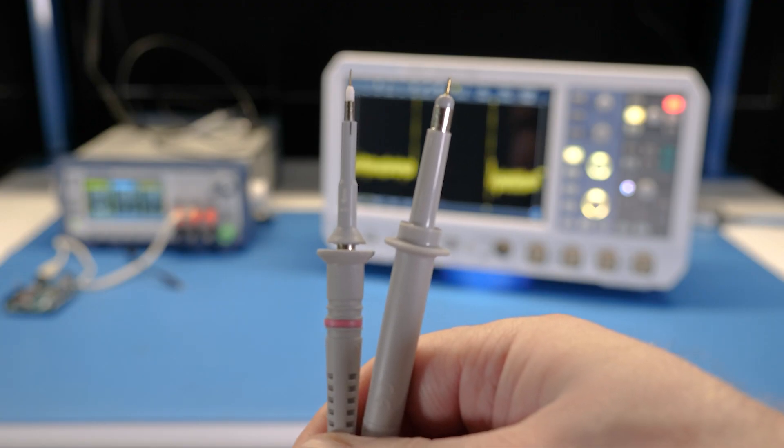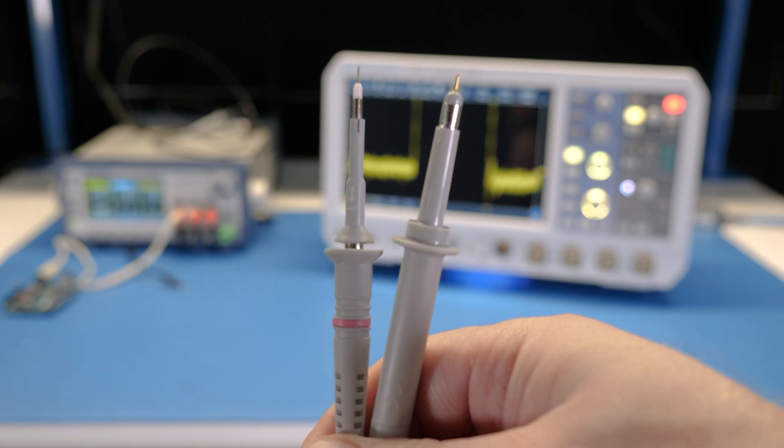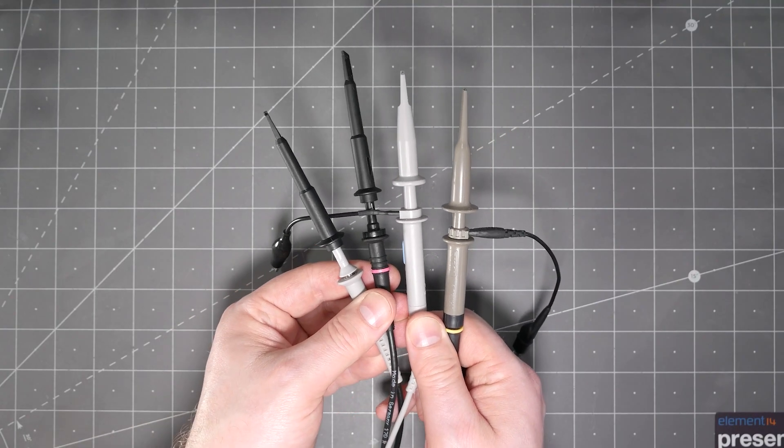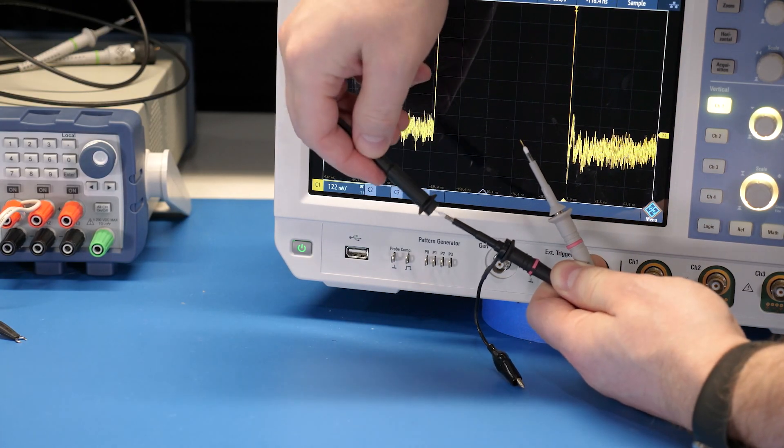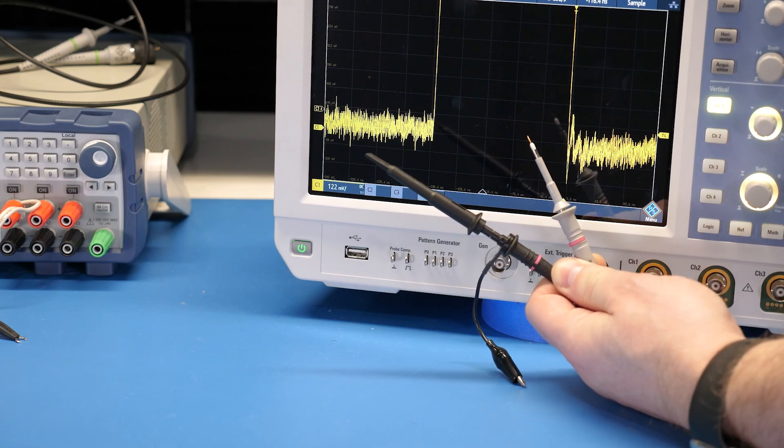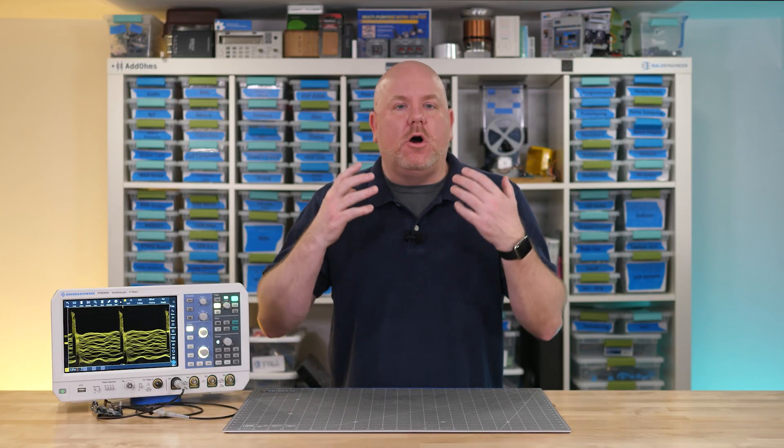Two common probe sizes are 2.5 and 5 millimeter and by the way almost no scope manufacturer makes their own low-cost passive probes. For example many accessories for one brand of probe works just fine on others. With that said there are very expensive passive probes and those can be a totally different story but in general there's a lot of commonality.